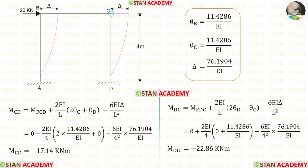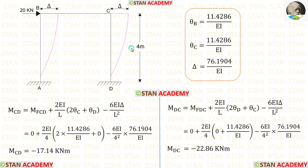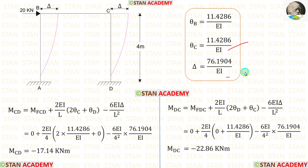Now let us make the slope deflection equations for column CD. Since column CD is also subjected to sway, we add the moments due to sway in the equations. Applying the fixed end moments (zero) and length of CD = 4, and noting that at the fixed support D, θD = 0, and substituting the values of θC and delta, we obtain MCD and MDC.